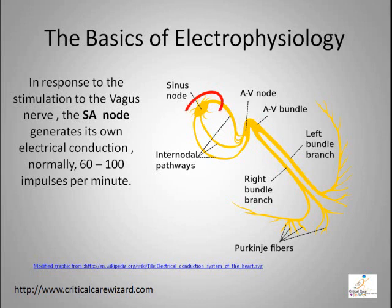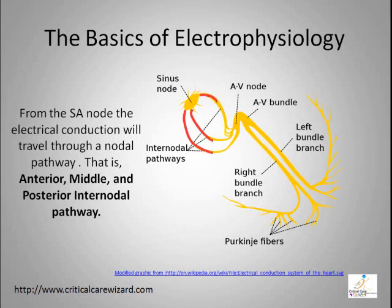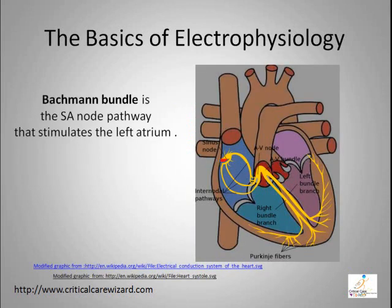In response to stimulation of the vagus nerve, the SA node generates its own electrical conduction, normally 60 to 100 impulses per minute. From the SA node, the electroconduction travels through the nodal pathway — the anterior, middle, and posterior internodal pathways. The internodal pathway is the usual conduction route from the SA node to the AV node. The innervation to the left atrium is called the Bachmann bundle, which is the SA node pathway that stimulates the left atrium.